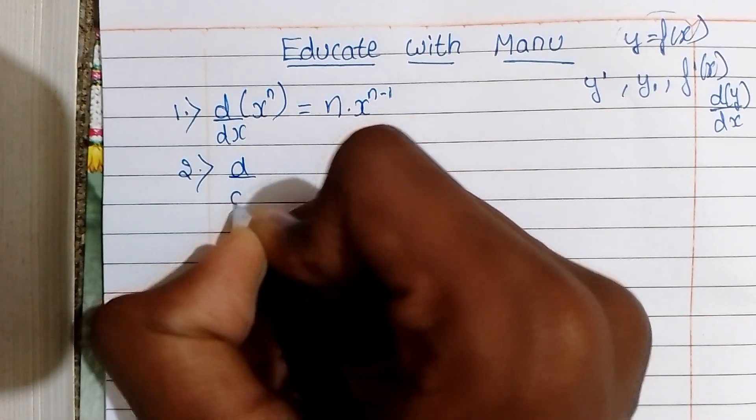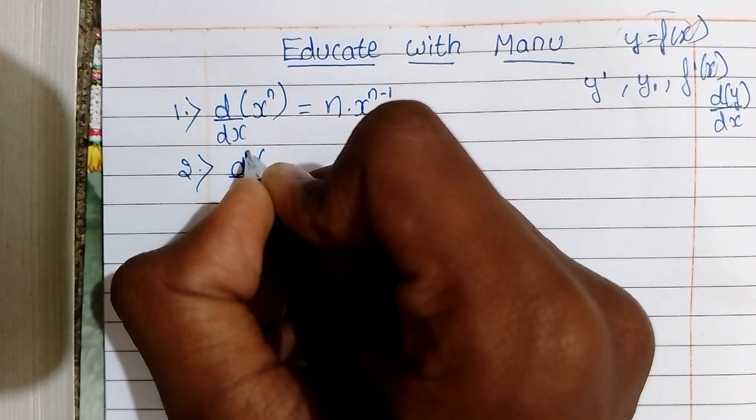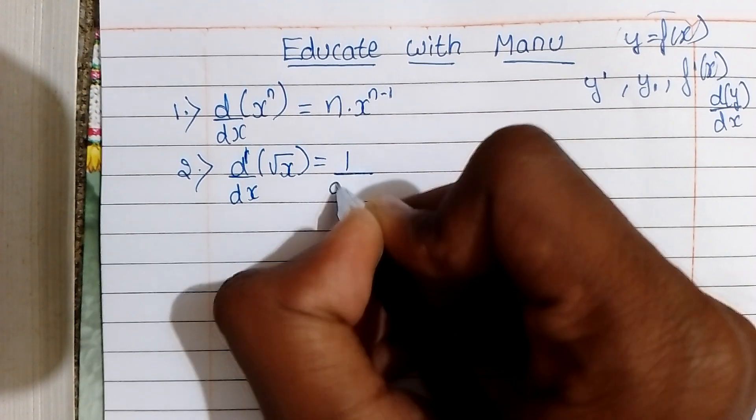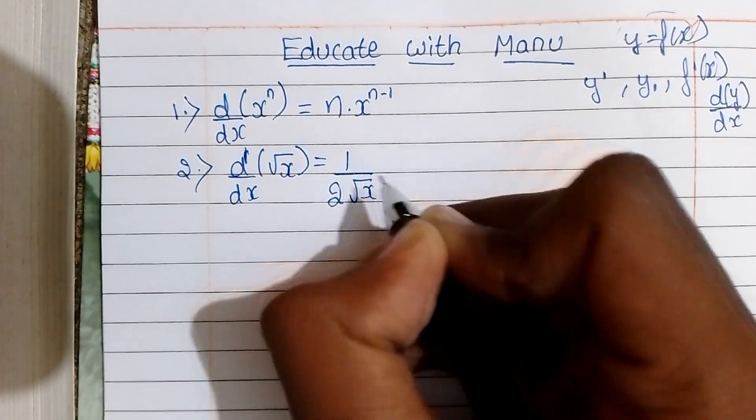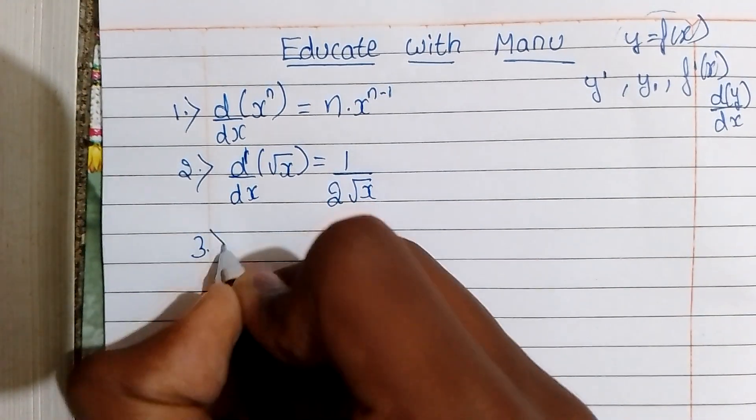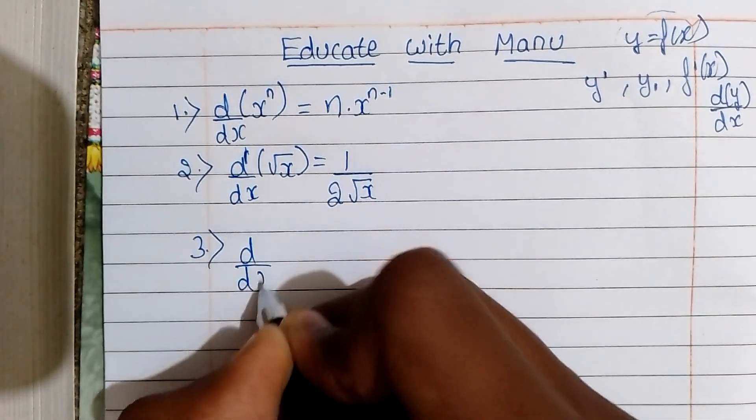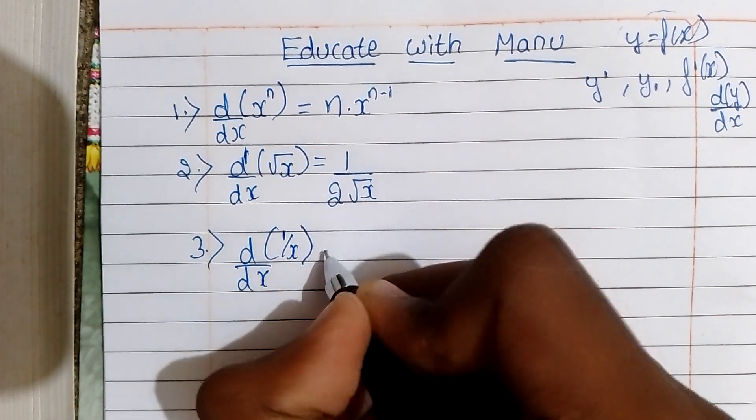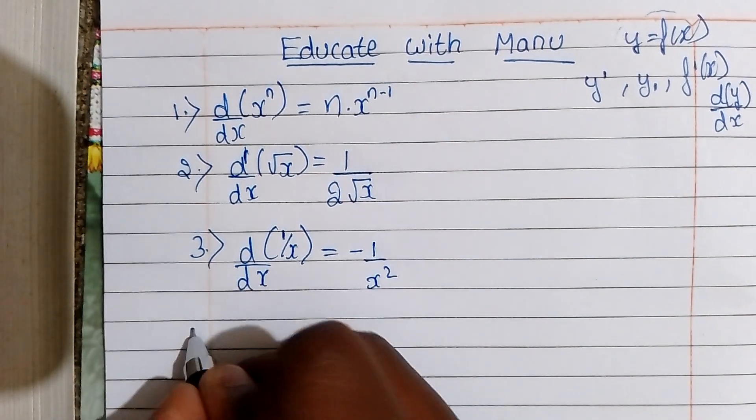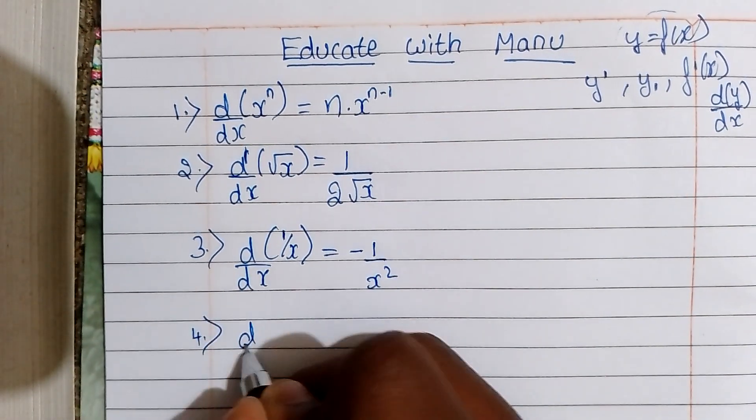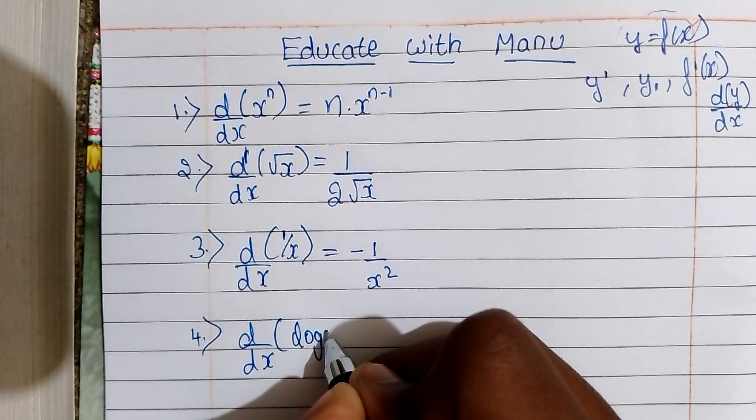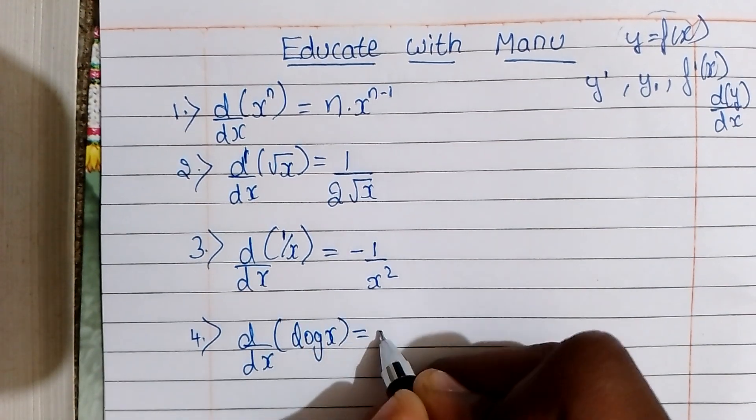Next, d/dx of root x. Root x derivative is 1/(2 root x). Next, d/dx of 1/x is minus 1/x².